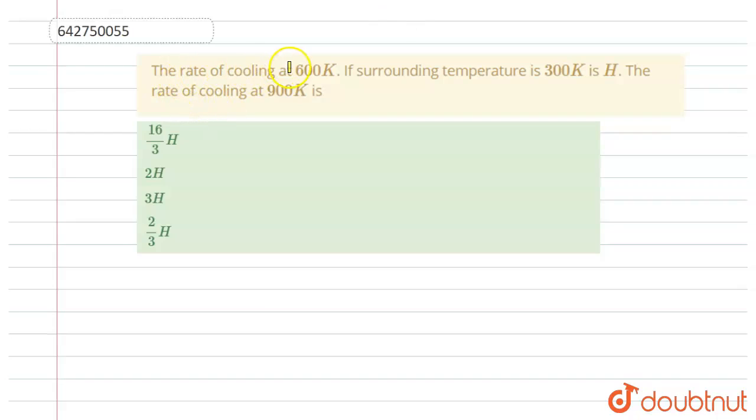The rate of cooling at 600 kelvin if surrounding temperature is 300 kelvin is H. The rate of cooling at 900 kelvin is... So in this question we have to find the rate of cooling at 900 kelvin.